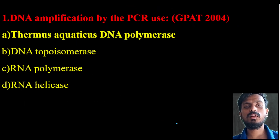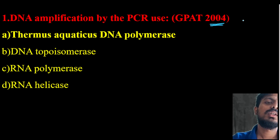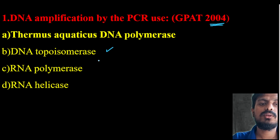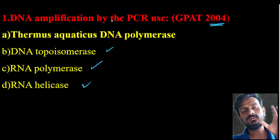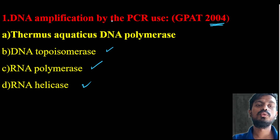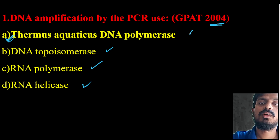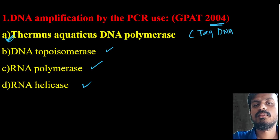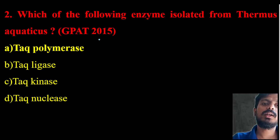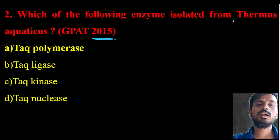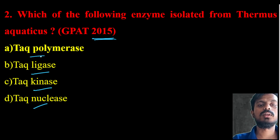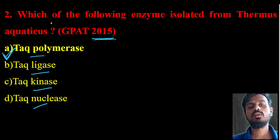This question was asked in GPAT 2004: the DNA amplification technique PCR uses which enzyme from Thermus aquaticus? The correct answer is Taq DNA polymerase. For synthesis of complementary strands, we need Thermus aquaticus DNA polymerase — shortly known as Taq DNA polymerase. This question was also asked in GPAT 2015: which enzyme is isolated from Thermus aquaticus? The right answer is Taq polymerase.